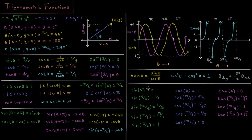Looking at the graphs of these functions: sine at 0 starts at 0, goes up to 1 at 90 degrees, 0 at 180, negative 1 at 270, back to 0, and repeats every 2 pi. Cosine starts at 1, goes to 0 by 90 degrees, negative 1 at 180, 0 at 270, and back to 1 by 360 degrees. Tangent at 0 degrees starts at 0, quickly goes up to infinity (undefined) at 90 degrees, comes back from negative infinity up to 0, repeating every 180 degrees.